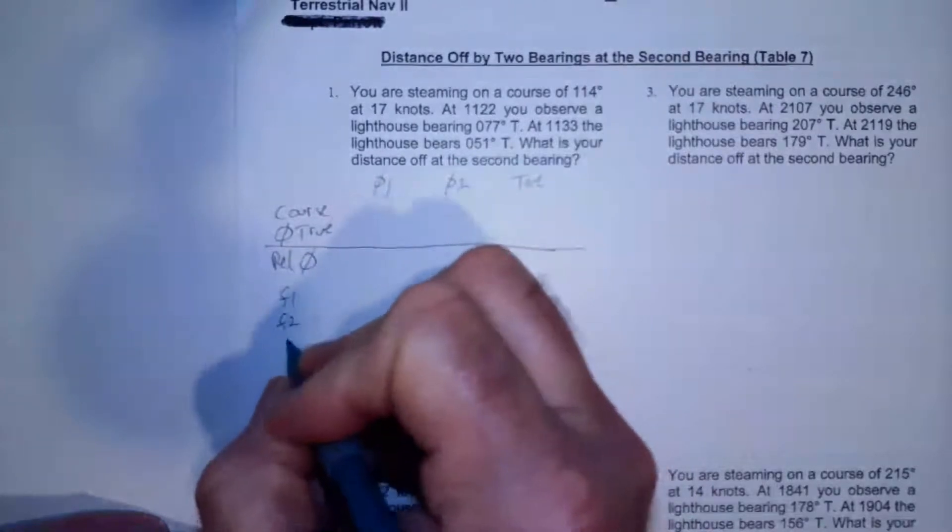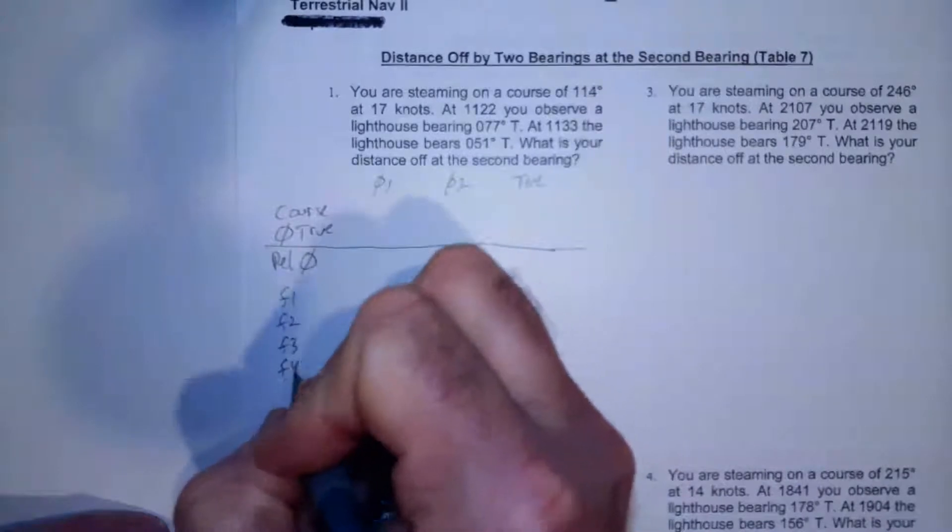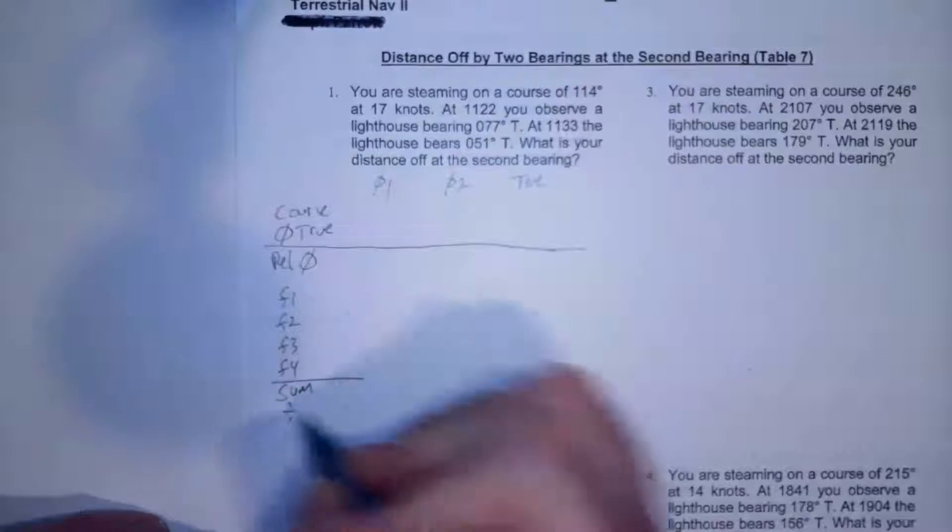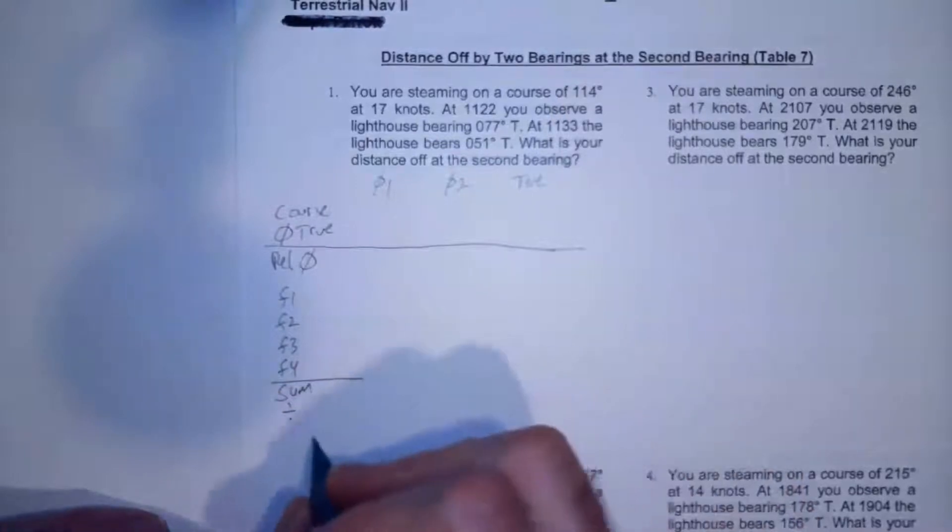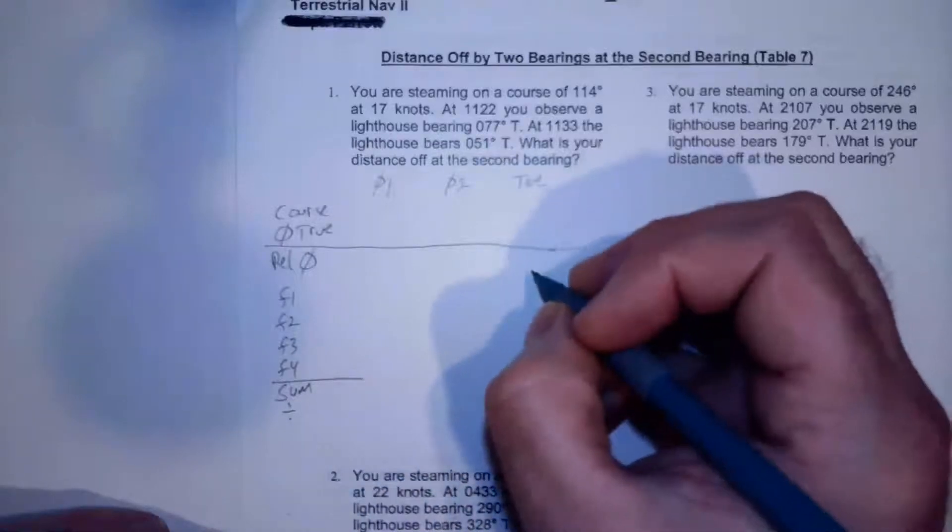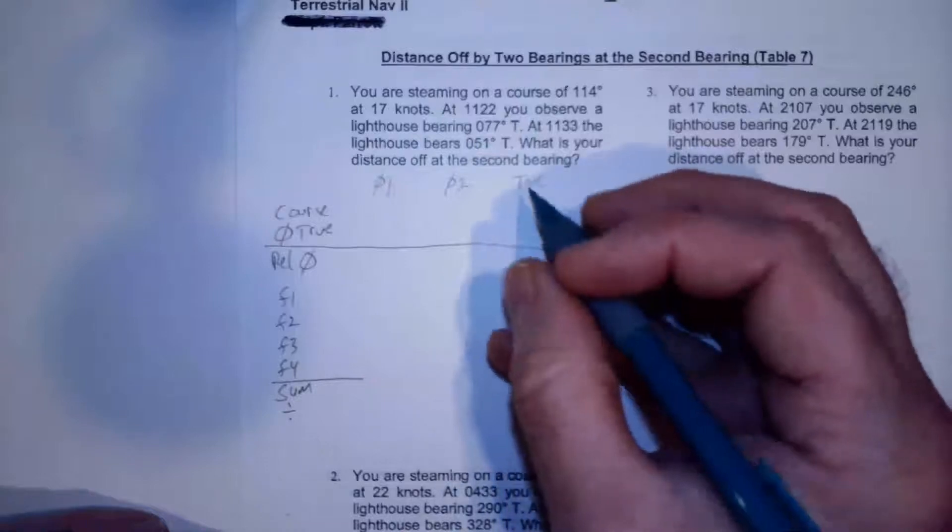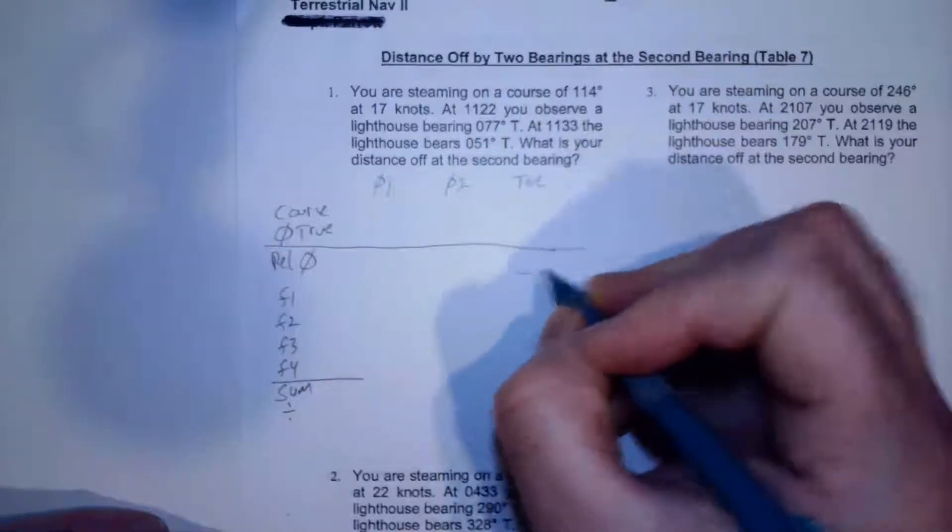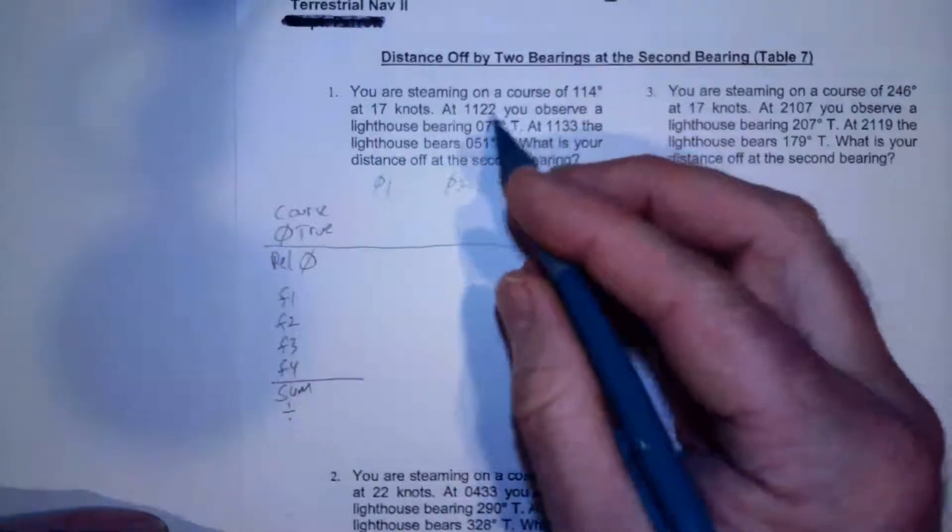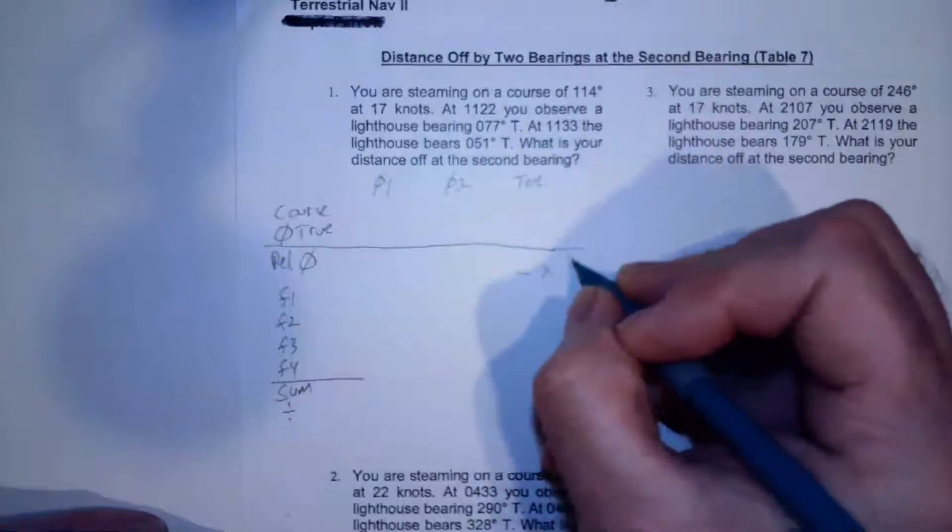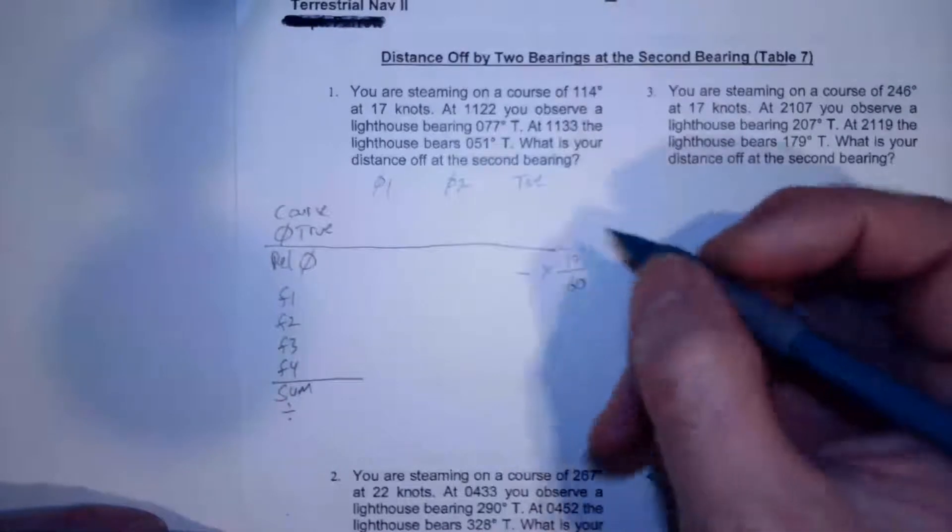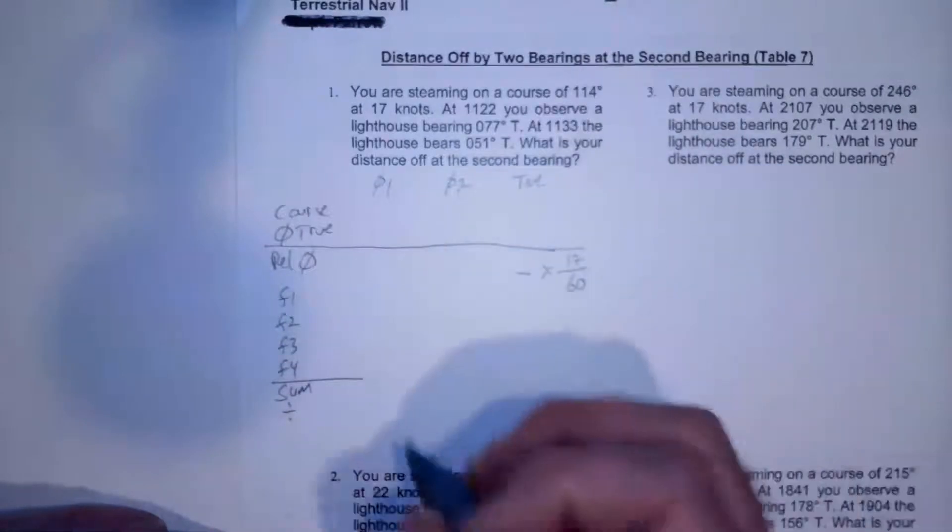So I'm going to go factor one, factor two, factor three, factor four, and I'm going to sum those, and then I'll divide by the number of factors. We'll have to see what that is, and then that will give me my ratio. Then my time, I'm going to calculate what my time is, and then I'm going to multiply that by the speed, which in this case is 17 knots, 17 divided by 60, and that's a conversion factor there.